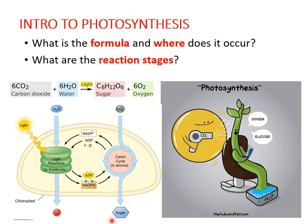When we talk about photosynthesis, the first thing I want to draw your attention to is the formula for photosynthesis, written out right here. Plants take in carbon dioxide that we breathe out and with the use of water and solar power — light from the sun — they are then able to produce sugar and release oxygen, which I think is kind of important for us.